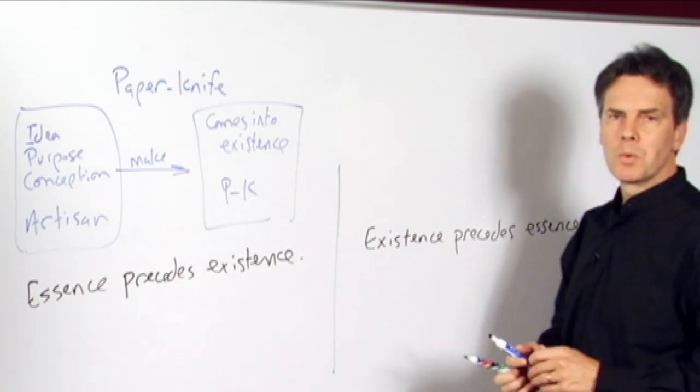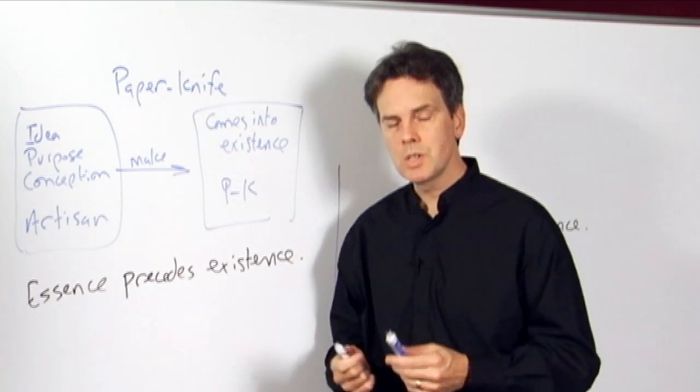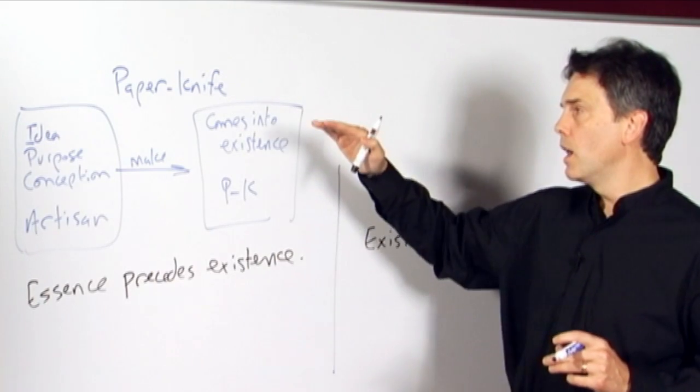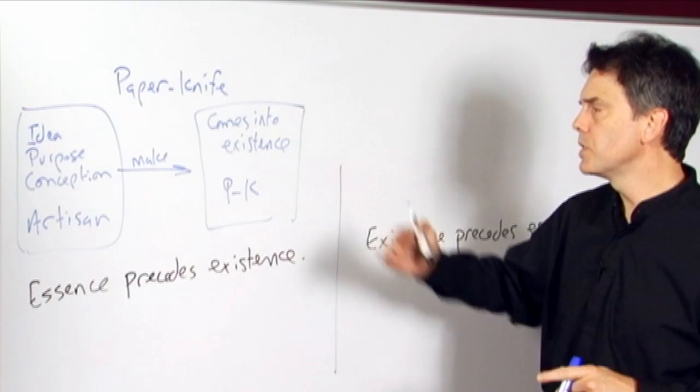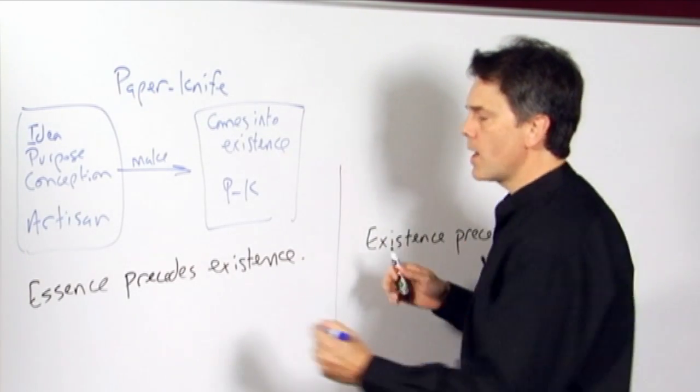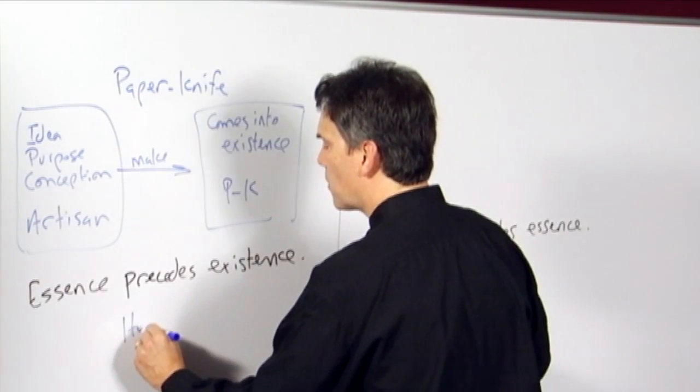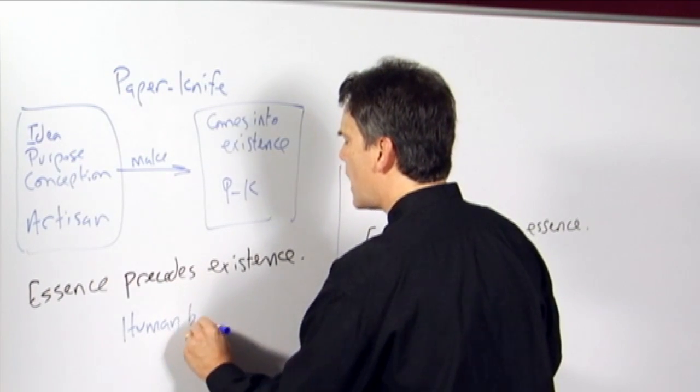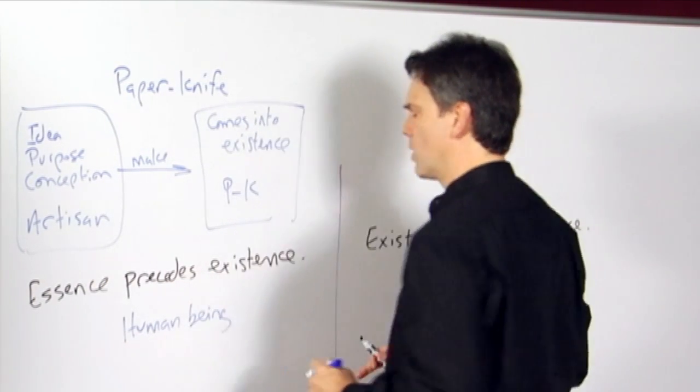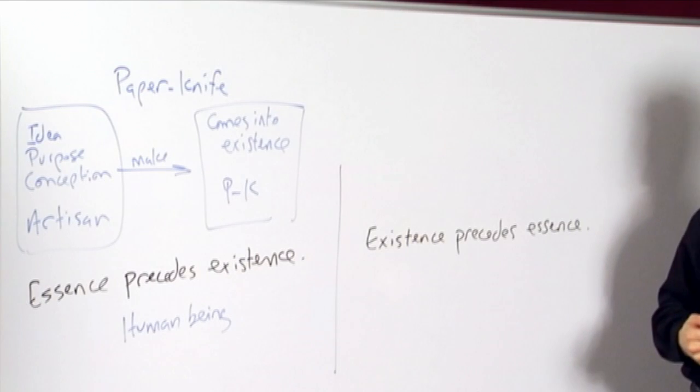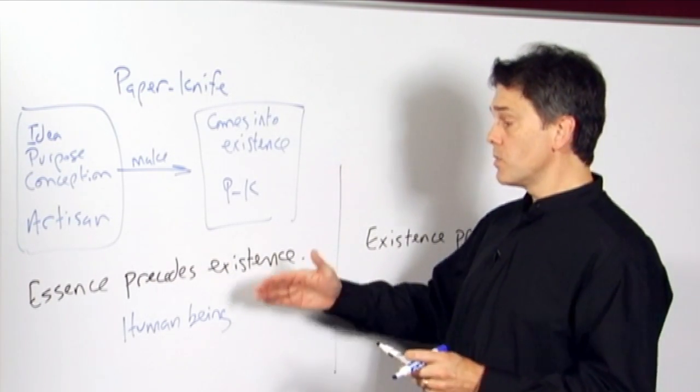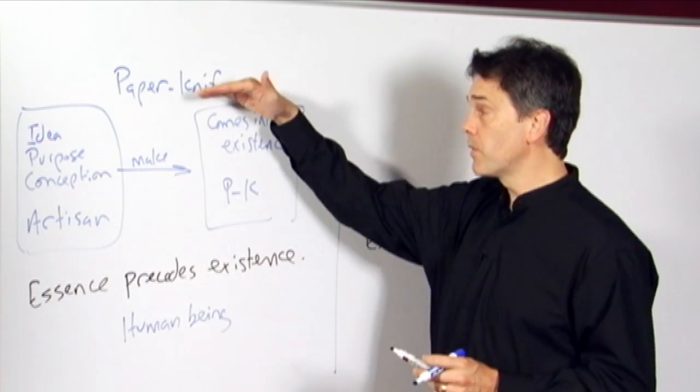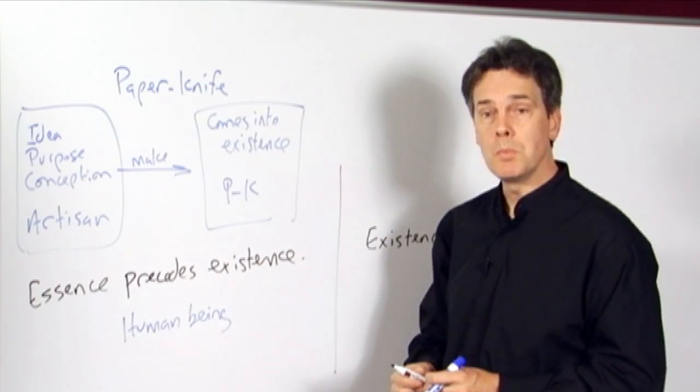Now, of course, we're not really interested in paper knives. We're just using this as an example. What we are interested in is human beings. Why are we here? And Sartre is using the paper knife as an example to contrast human beings. If we then were to ask the questions, why do we exist here? What is our purpose? What is the meaning of our lives, and so forth? Well, a traditional answer says, essentially, it's the same story that we give for paper knives applied to human beings.